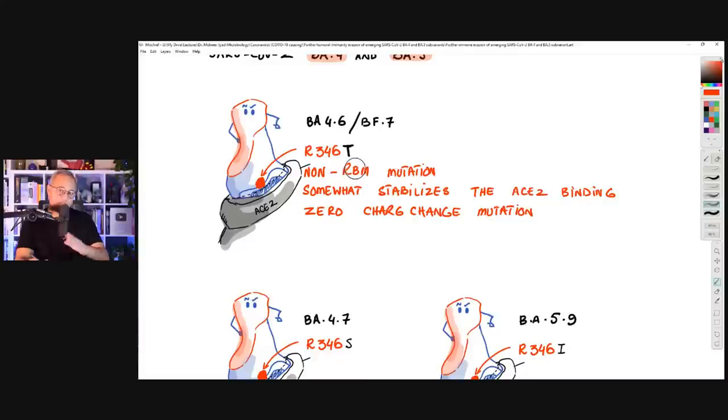Now, R346 mutation is actually on BA.4.6, BA.4 as well. However, BA.4.6 has further flavors of these mutations. Similarly, BA.5.7 also has similar mutations. So what is that mutation, R346T, or R346 mutations?